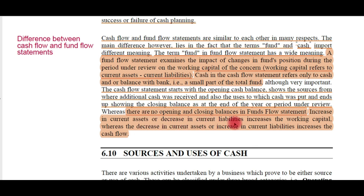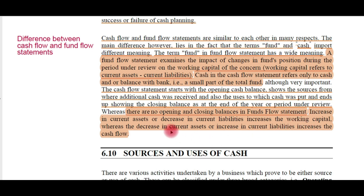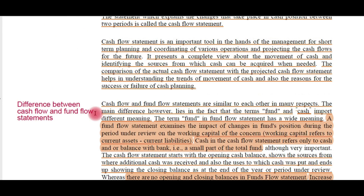An increase in current assets or decrease in current liabilities represents an increase in working capital. When current assets increase or current liabilities decrease, there is an automatic increase in working capital. A decrease in current assets or increase in current liabilities increases cash flow, meaning a decrease in working capital. When current assets decrease, they are essentially redeemed or sold off and converted into cash — therefore cash increases in the business.